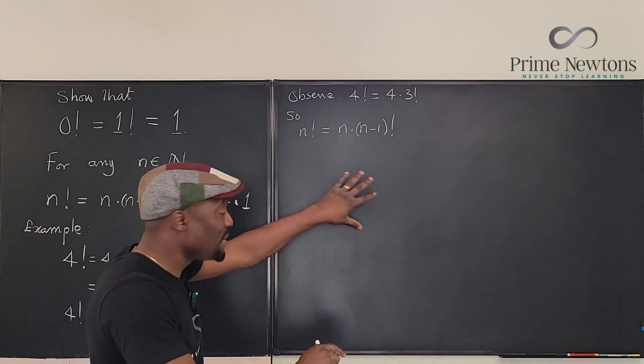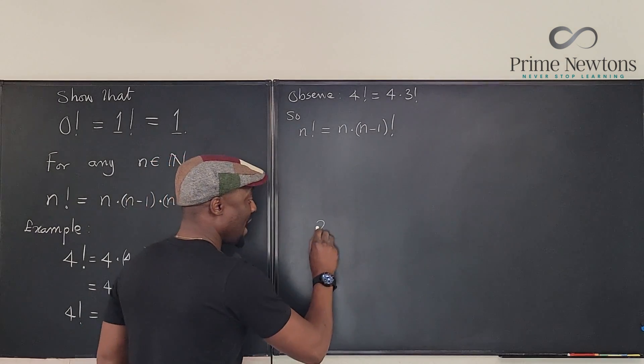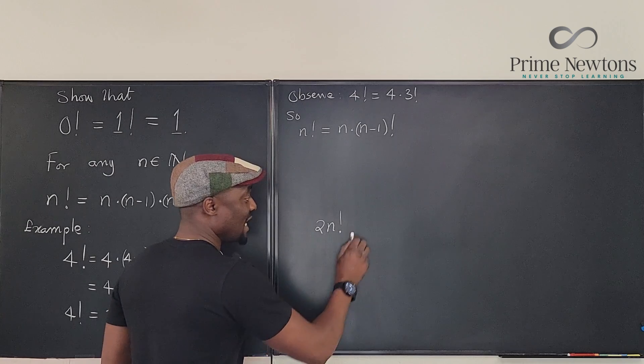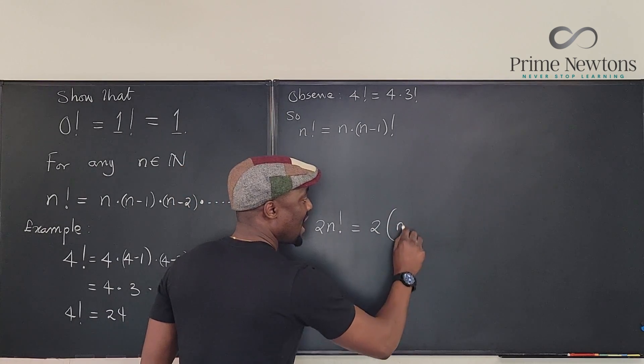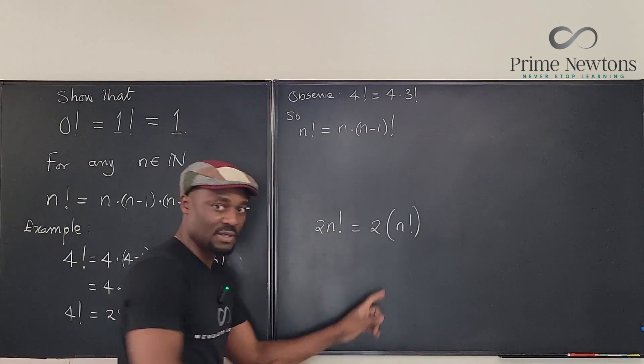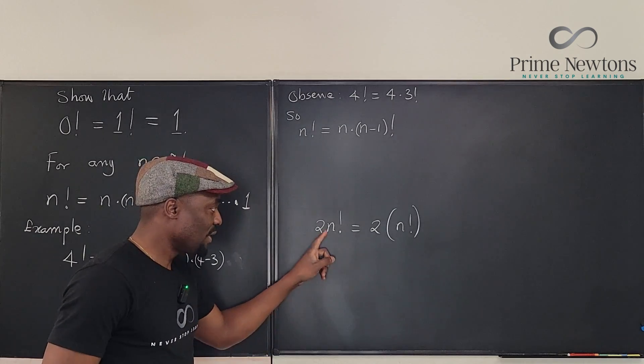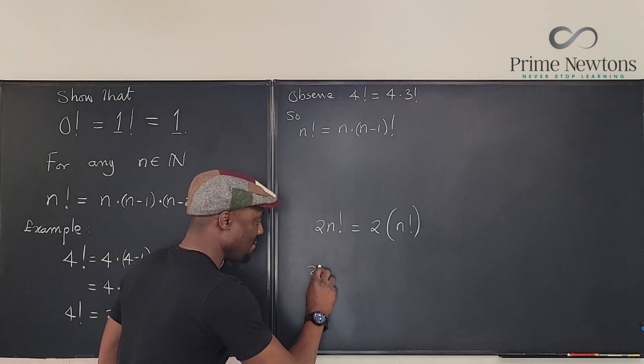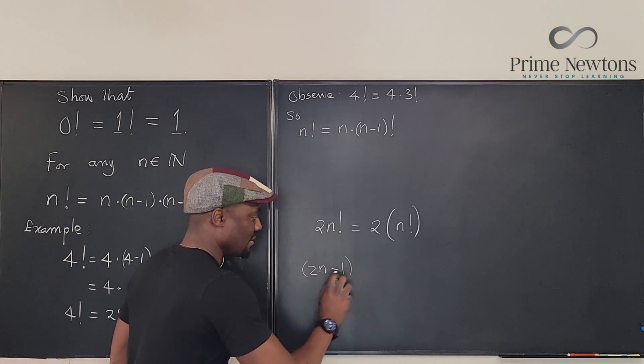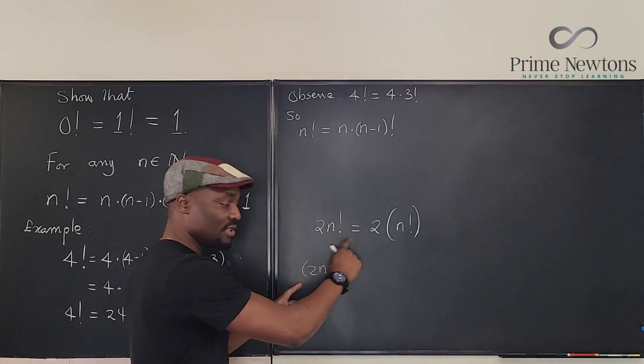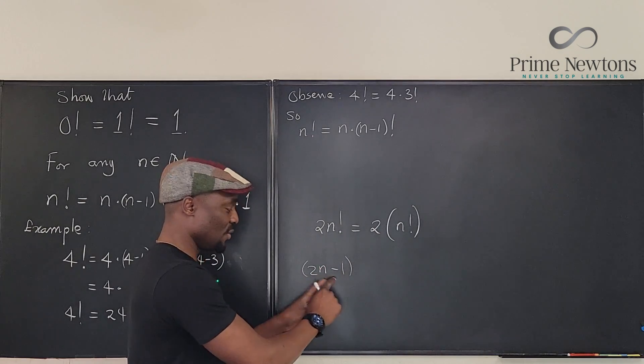So if I write 2n factorial, it's the same thing as 2 times n factorial. Note that. So the factorial is not 2n minus 1. No, you cannot start your multiplication by saying 2n minus 1.